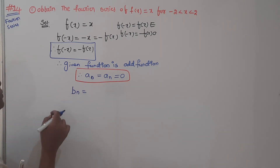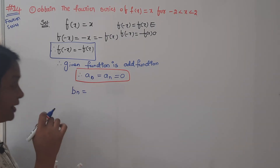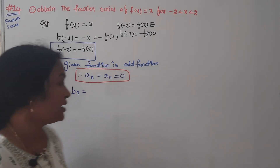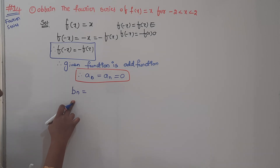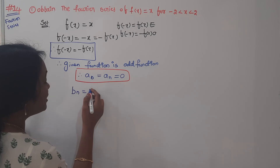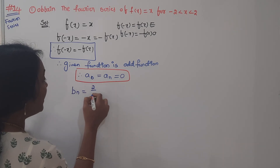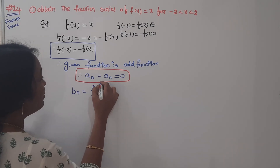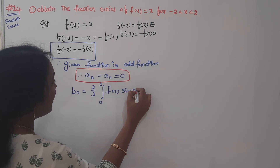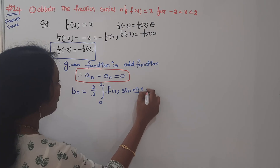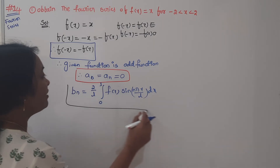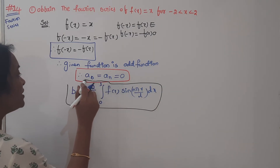The function is an odd function. Therefore a0 is 0 and an is 0. That means only the bn value remains. If you have an odd function you will get only the sine series — that means bn value. The bn formula is: bn equals 2 by L, integral from 0 to L, of f(x) times sin(nπx/L) dx. This is the bn value — substitute it here.